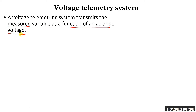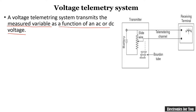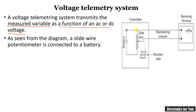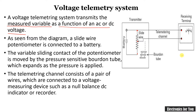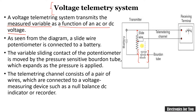This is the diagram for the voltage telemetry system. In this diagram, you can clearly see a slide wire potentiometer is used and it is connected to a battery. It has two terminals with a pair of wires connected to a voltage measuring device. This is a Bordon tube, which is used for the measurement of pressure. As this is a voltage telemetry system, the Bordon tube will measure the variable as a function of voltage.